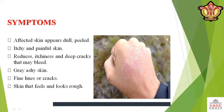This picture shows the symptoms of dry skin. Affected skin appears dull and peeled, itchy and painful. When dry skin occurs, there is itchy and painful skin, redness, itchiness, and deep cracks that may bleed, gray ashy skin, fine lines or cracks, and skin that feels and looks rough.